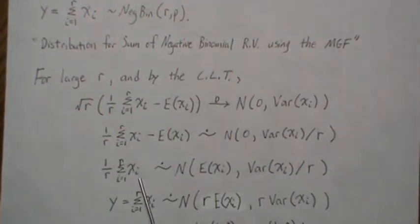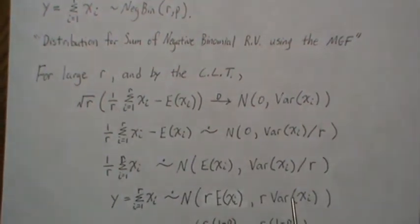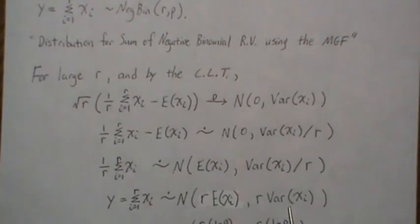Now let's multiply both sides by r. So we just get the expected value, or the sum of these Xi, which we're calling Y. Then it goes in as r times the mean, and it goes r squared, but that r cancels with one of those and we're left with r.